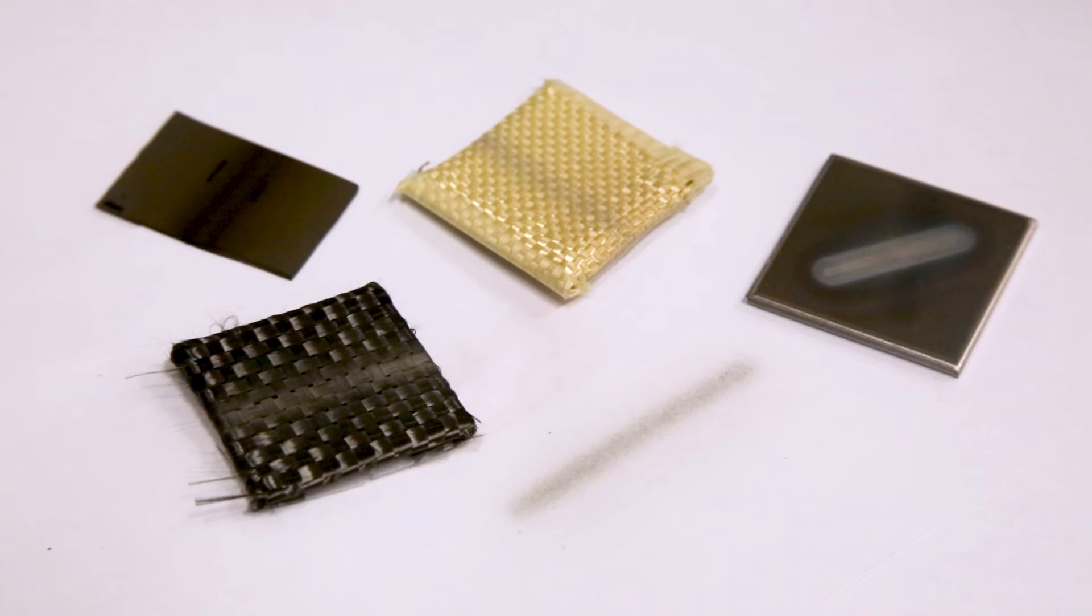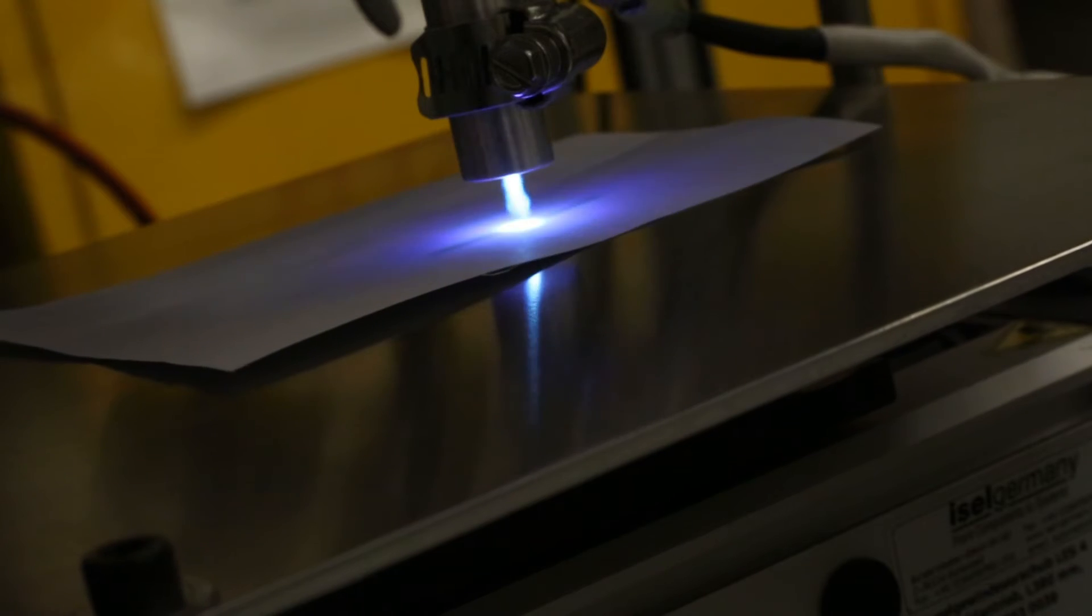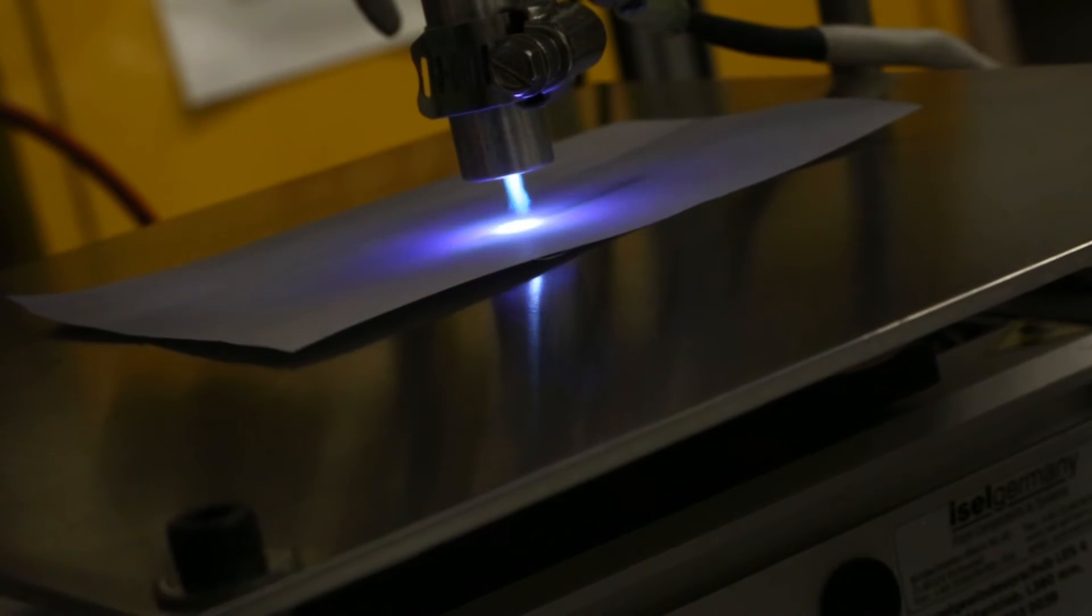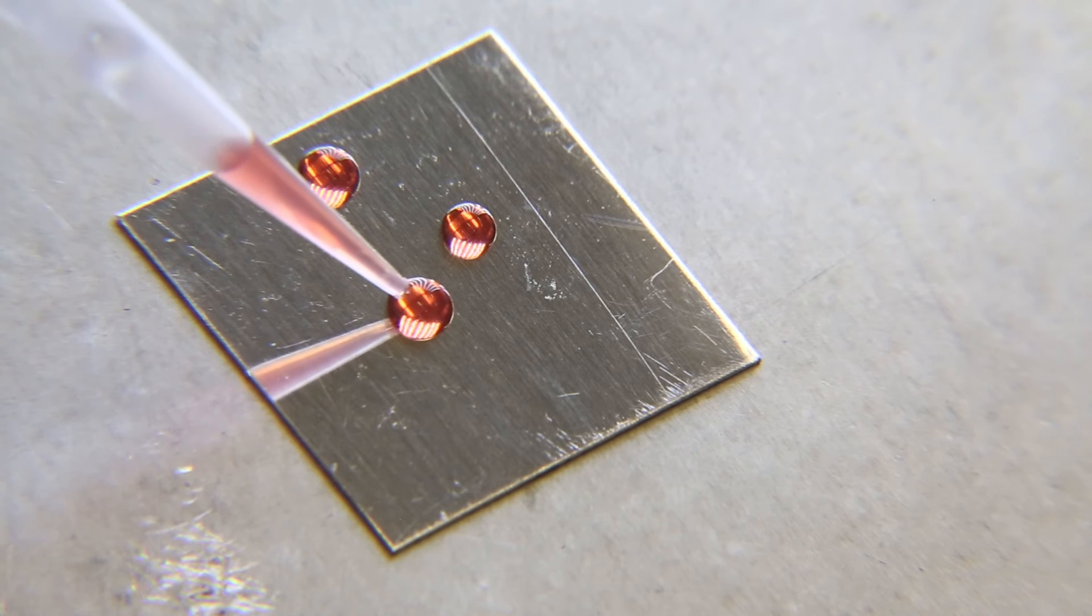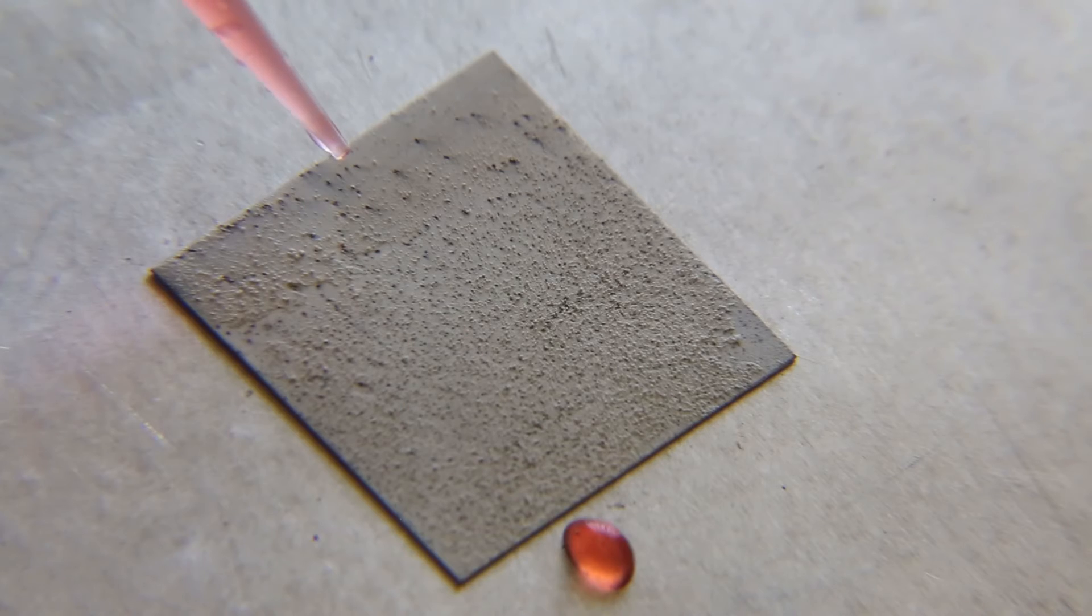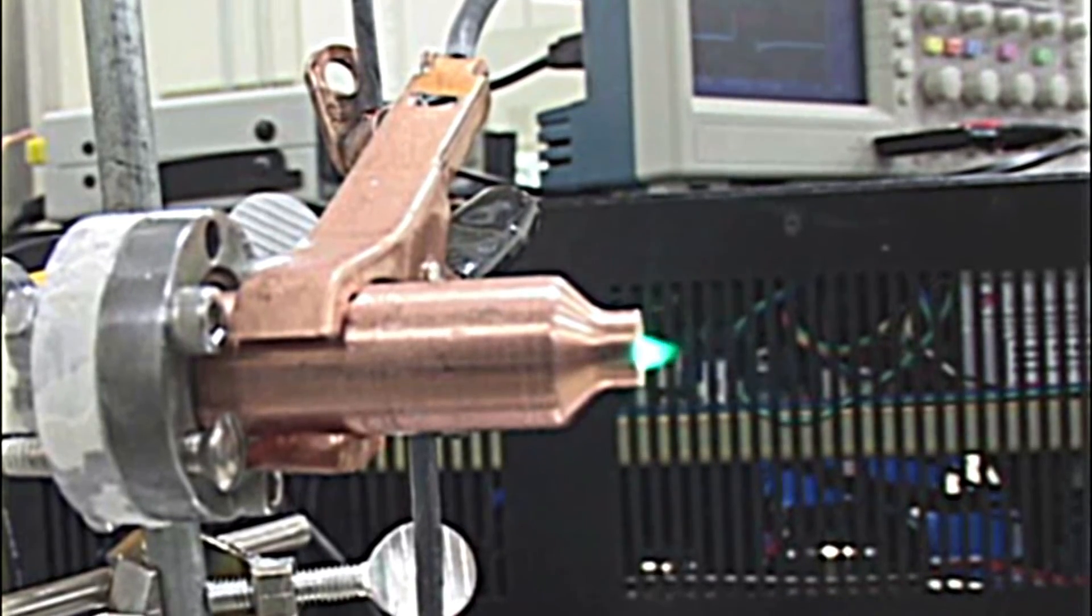HIPIPS can apply coatings on plastics, textiles, and biologically sensitive materials. HIPIPS is being developed to deposit protective metallic and ceramic coatings as an environmentally friendly alternative to electroplating.